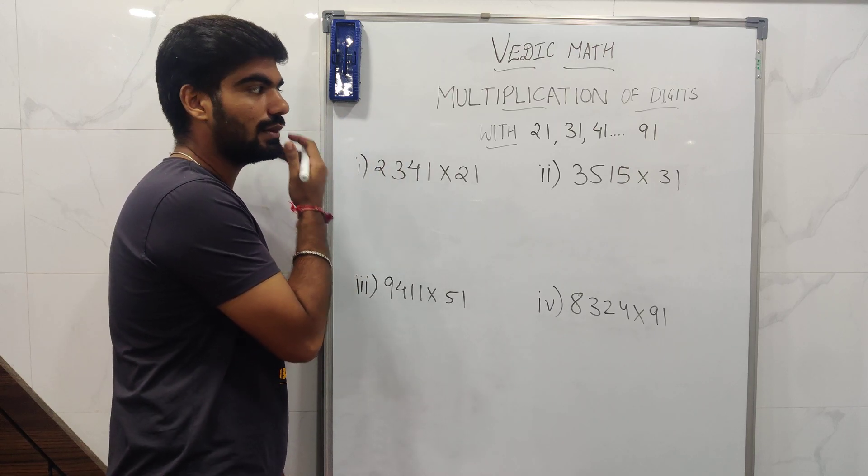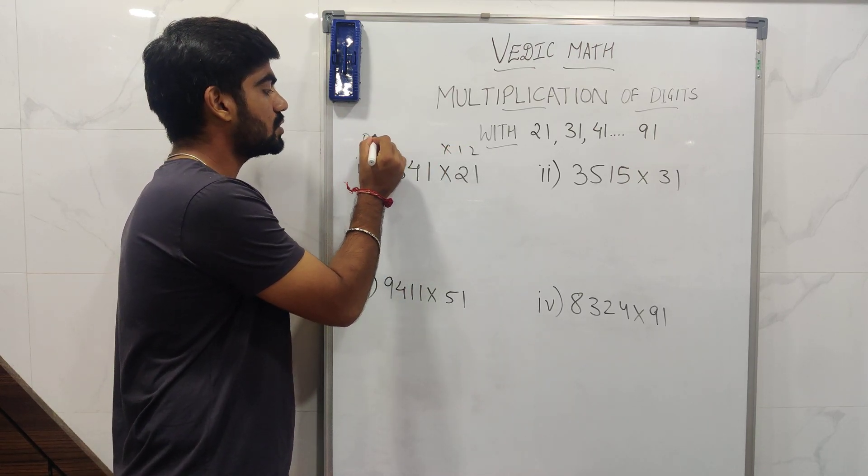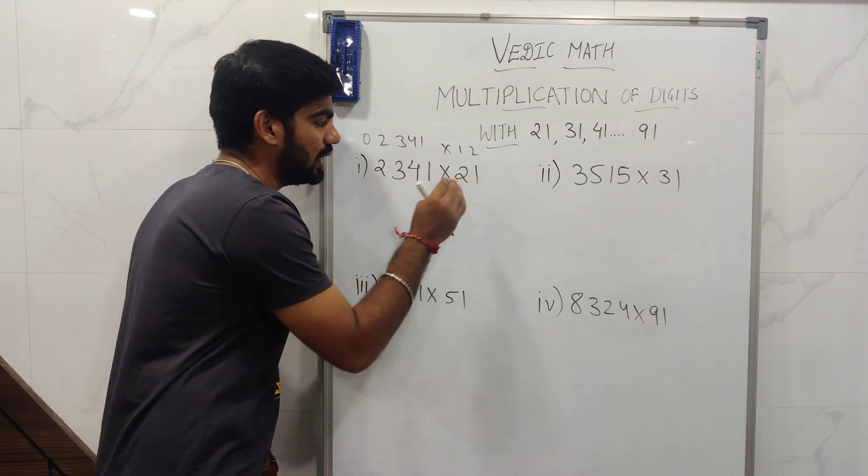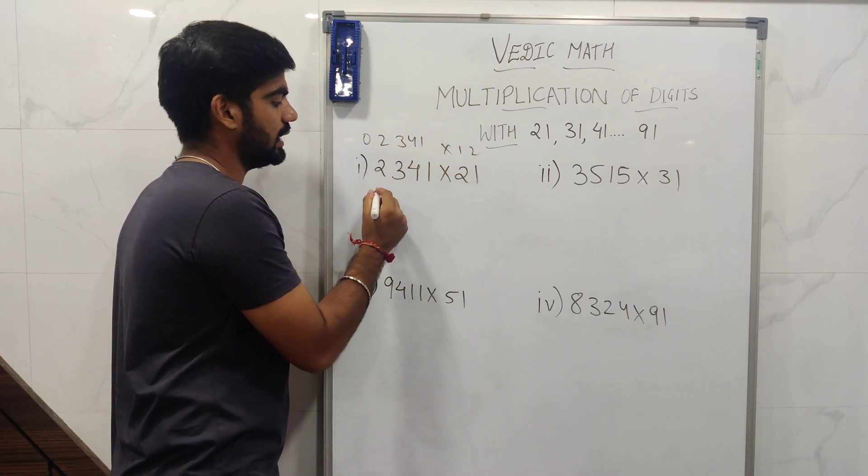In the first step, if we have to multiply by, let's say, 21, what we need to do is add 0 over here. But when we are multiplying with the number 21, or when the number 1 is in the units place, then we have to add 0 at the unit place.